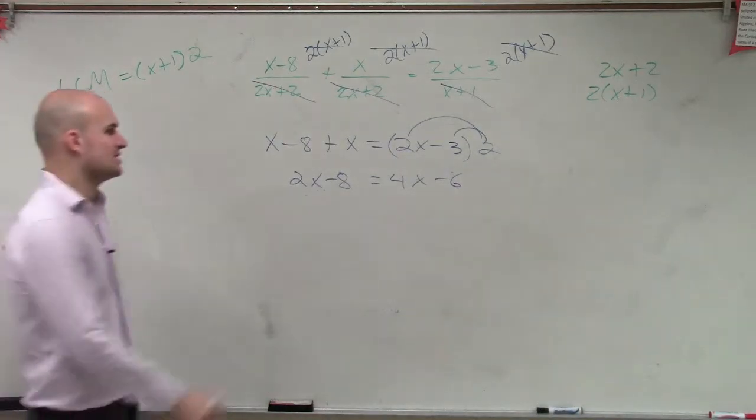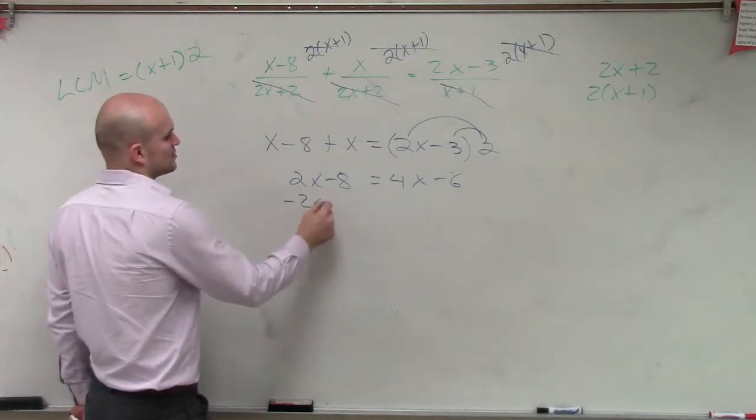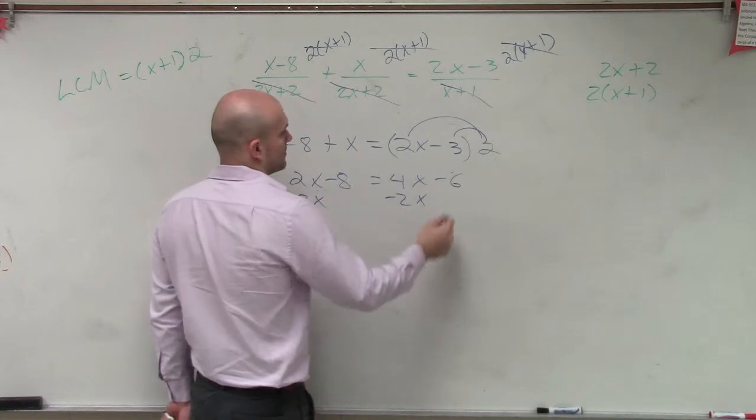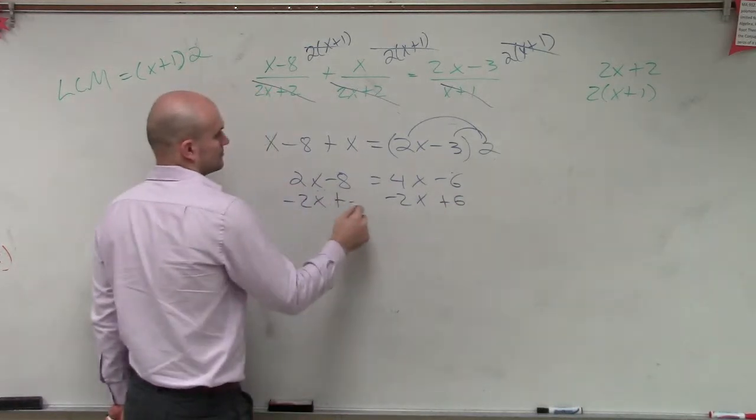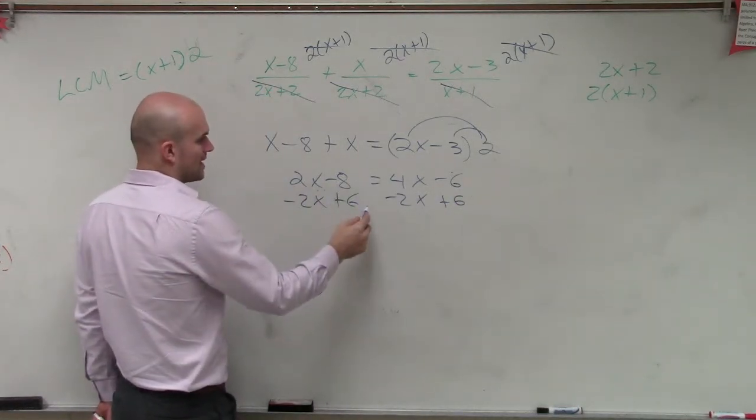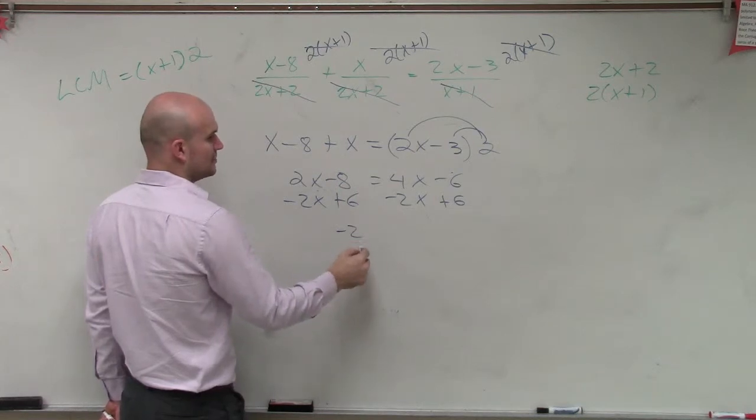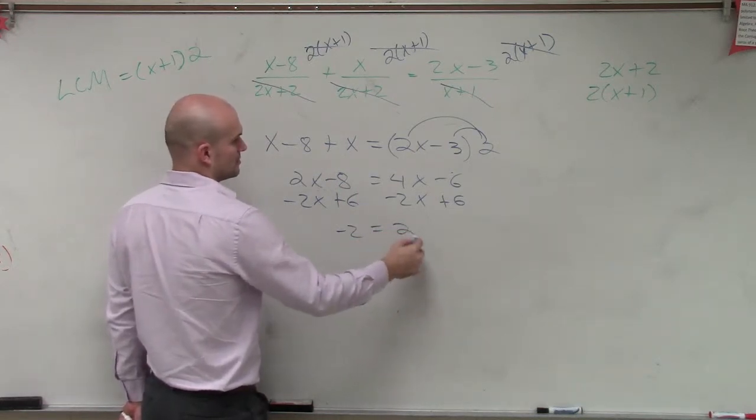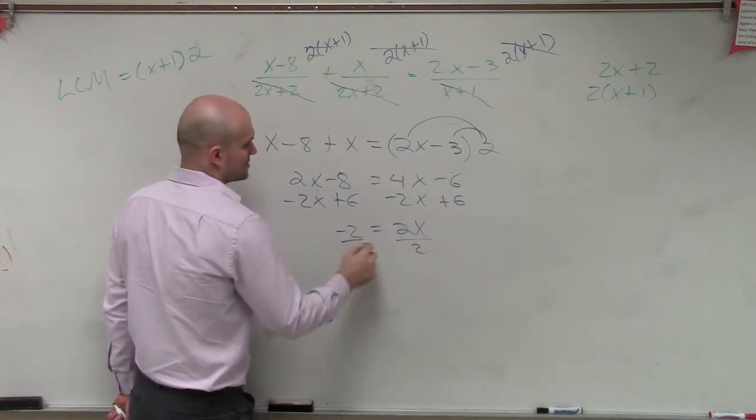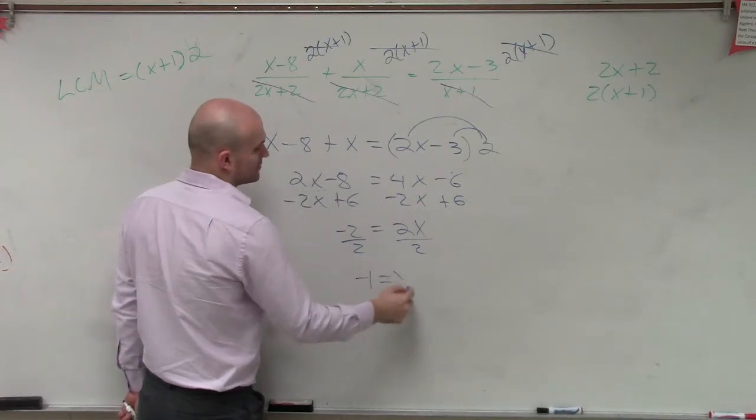And now to solve the problem, let's just get our x's on the same side. So subtract 2x, add 6. So therefore, I now have negative 2 equals 2x. Divide by 2, divide by 2, negative 1 equals x.